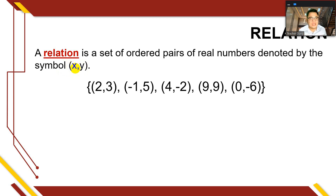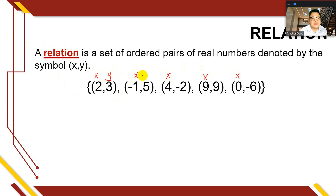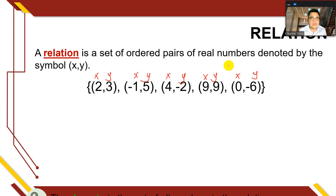For example, let's have this set: (2, 3), (-1, 5), (4, -2), (9, 9), (0, -6). All the first numbers for each pair are what we call the x-values, while the second numbers are the y-values. Keep in mind that the x-value is independent and y is dependent on the value of x. You cannot solve y without the value of x.